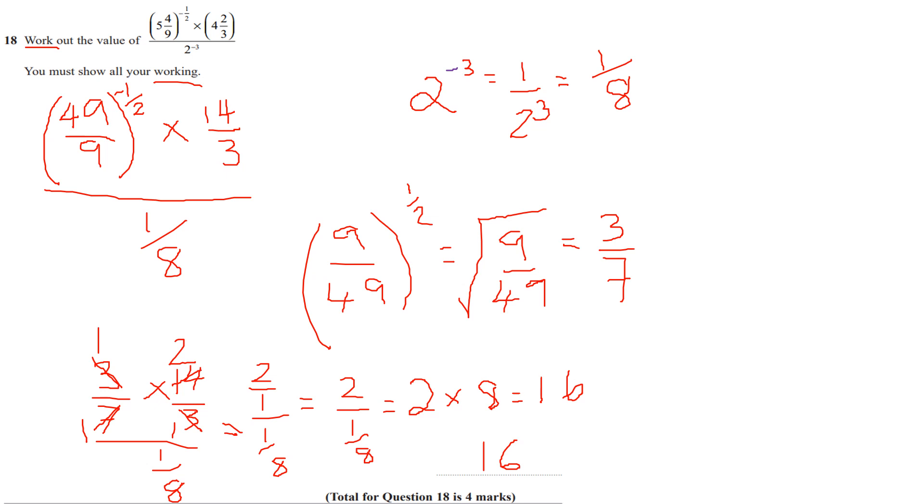So here, when I worked it out, I cross simplified. I divided the corresponding terms by 3 first, divided the other corresponding terms by 7. So I get 1 times 2, which is 2. 1 times 1 is going to be 1. So I get 2 over 1, which is just equal to 2, divided by 1 eighth.